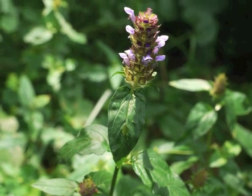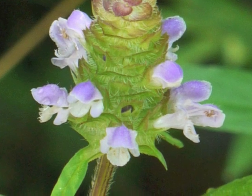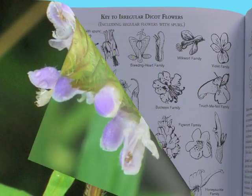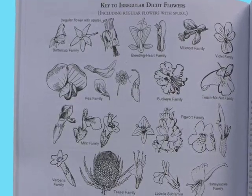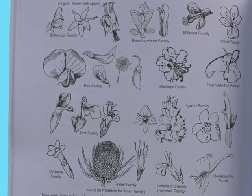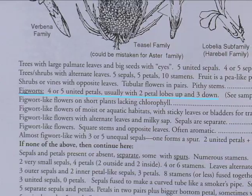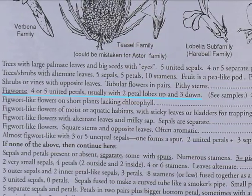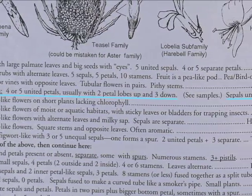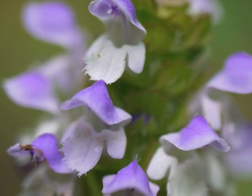The sepals seem to be missing and the petals are united. Next we turn to the page titled Key to Irregular Dicot Flowers. As we look down the descriptions on the page we come to figworts: four or five united petals, usually with two petal lobes up and three down, sepals united.